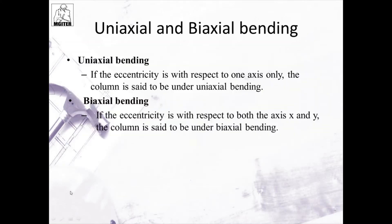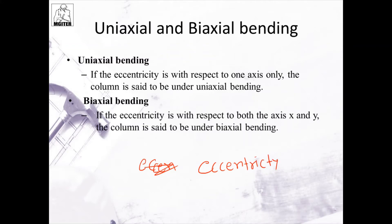Uniaxial and biaxial bending — both depend on eccentricity. In uniaxial bending, the eccentricity is with respect to one axis only. In biaxial bending, the eccentricity is with respect to both the x and y axes.